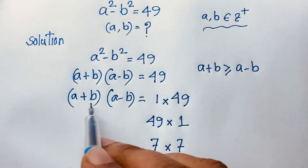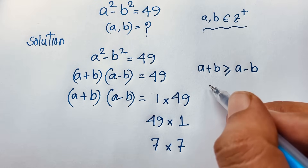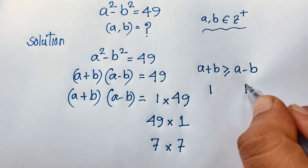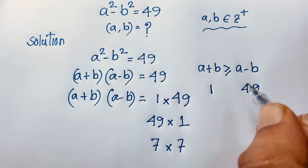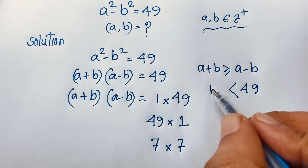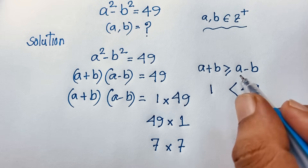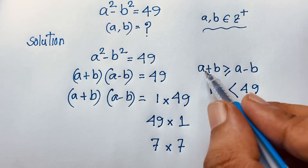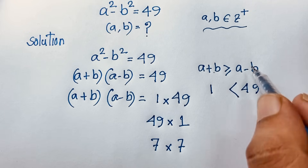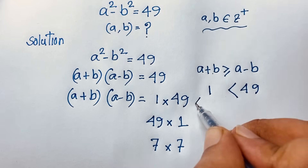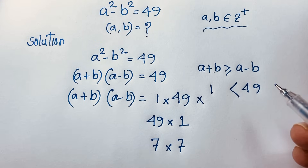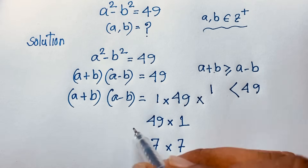If we think a + b = 1 and a - b = 49, we can see that 49 is greater than 1, which violates our condition that a + b must always be greater than or equal to a - b. So this case is not possible.